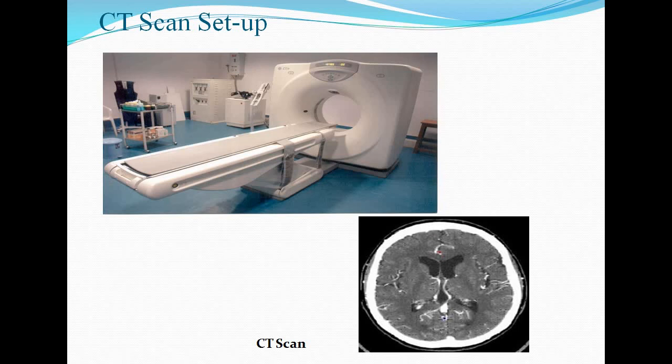CT scan setup. CT scan or computerized tomography scan combines a series of X-ray images taken from different angles around your body and uses computer processing to create cross-sectional images of bones, blood vessels and soft tissues.